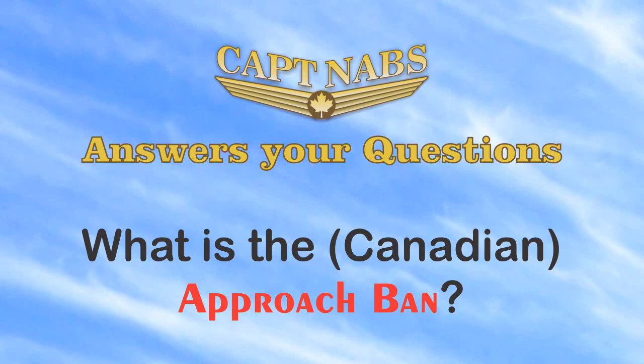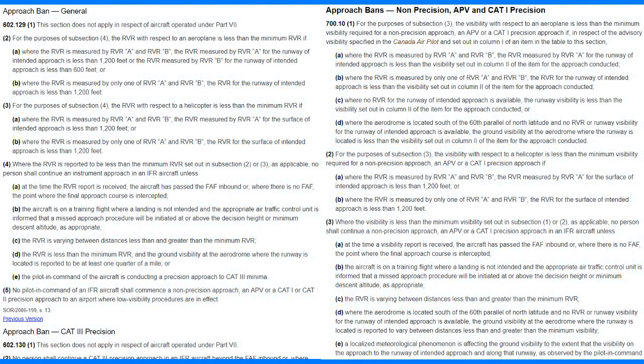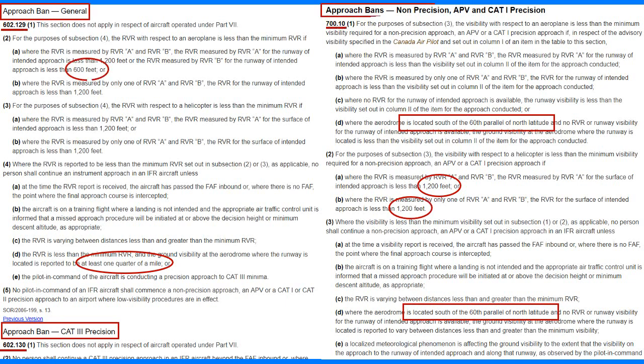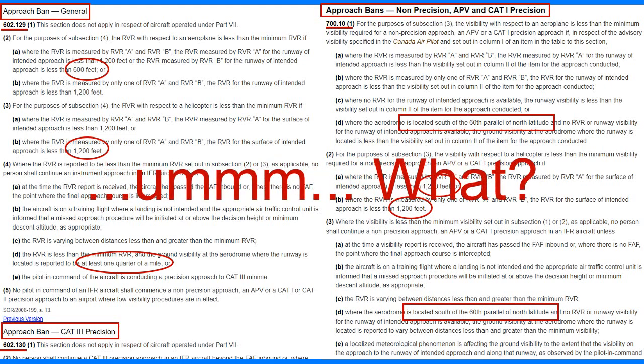Recently I mentioned the approach ban in another video and inevitably someone asked me what this approach ban is. So what is the approach ban? Well, anyone who flies in Canada must be familiar with the approach ban. The actual rules are part of the Canadian Air Regulations and are detailed in several different sections depending on the type of operation you're in. But instead of trying to read all this legal lingo, I will try to break it down into a more plain English explanation.